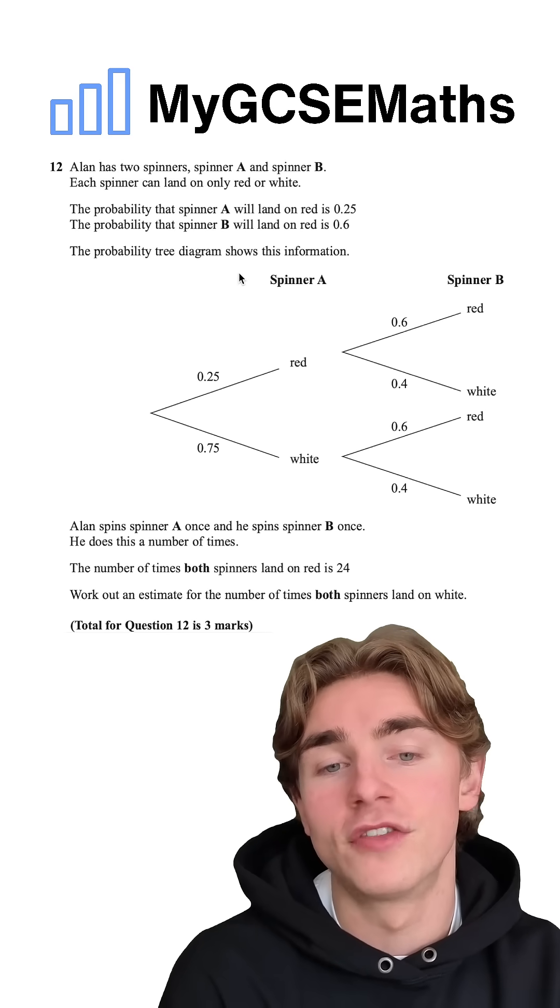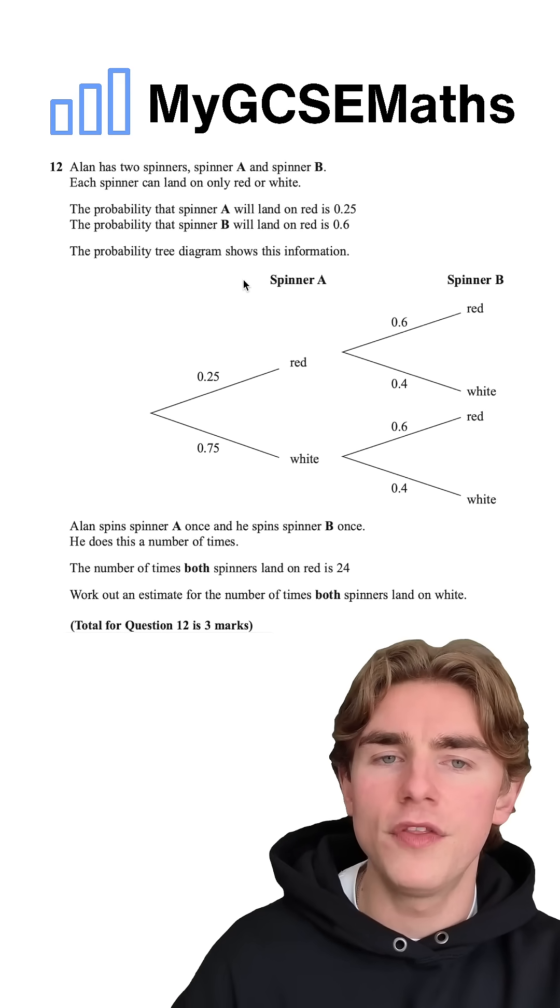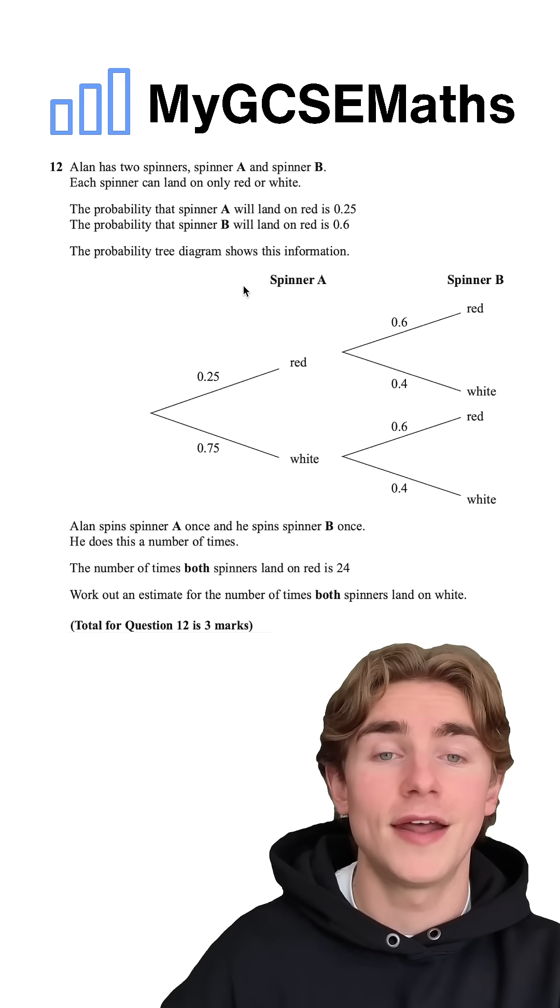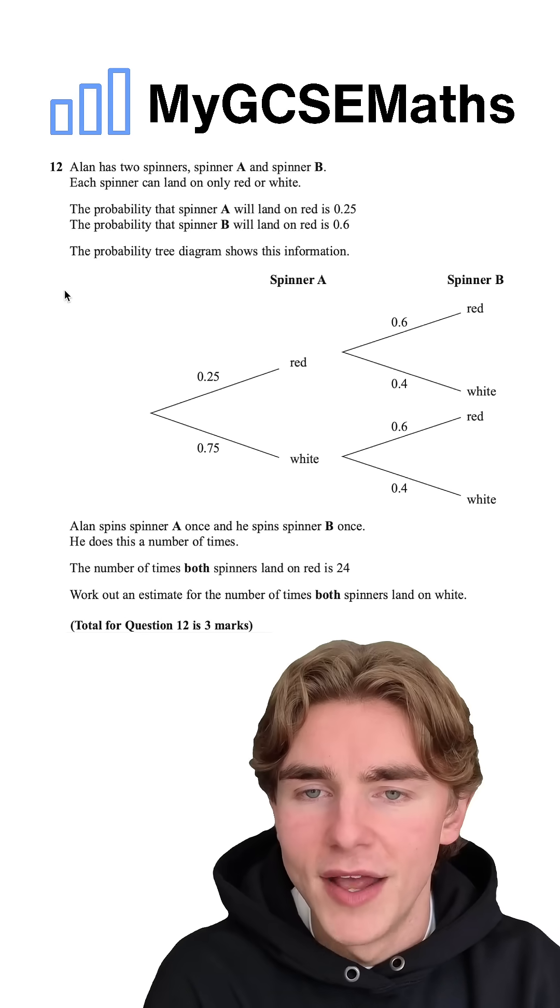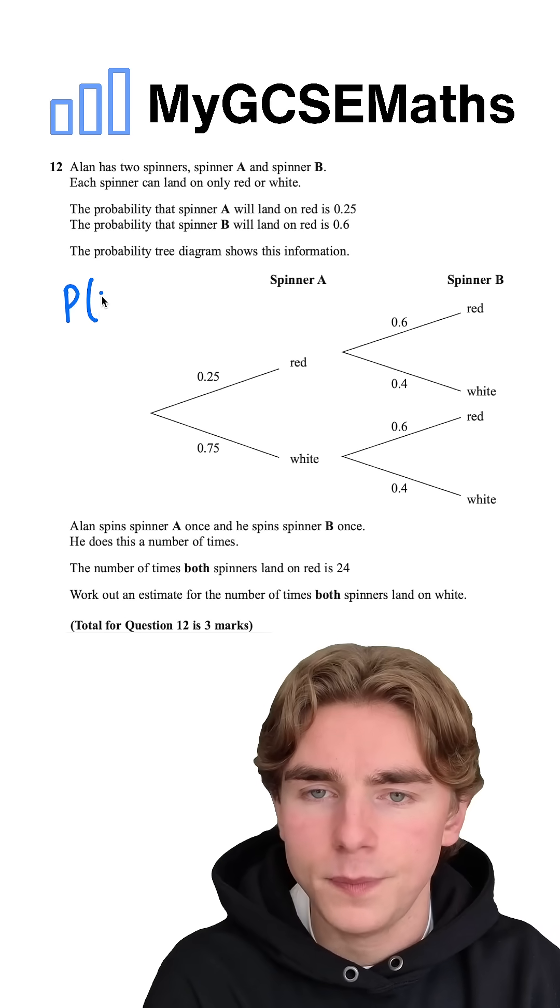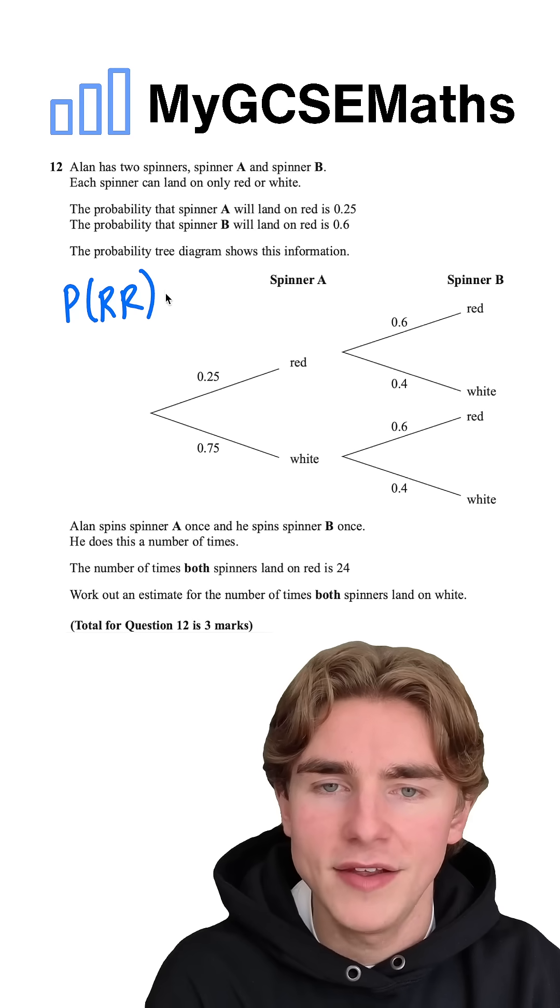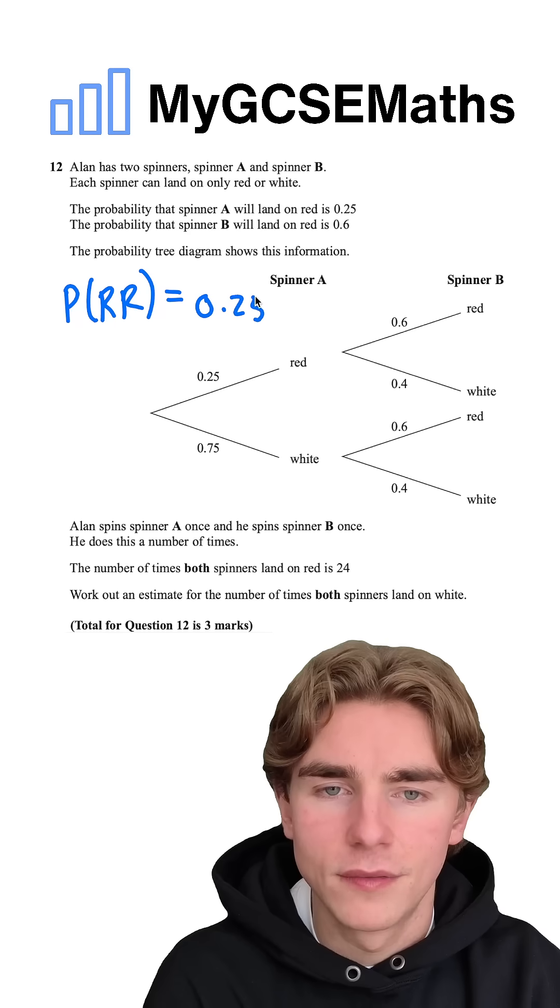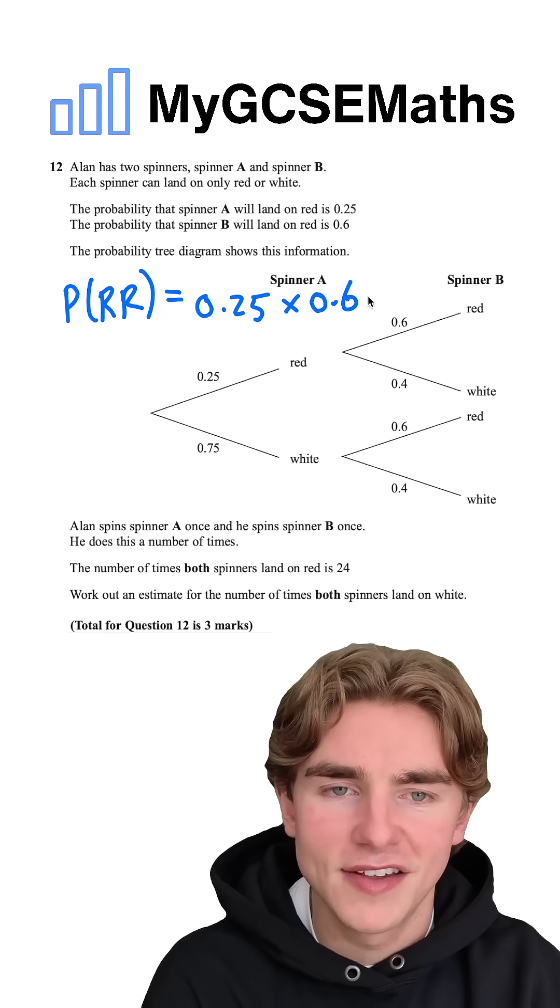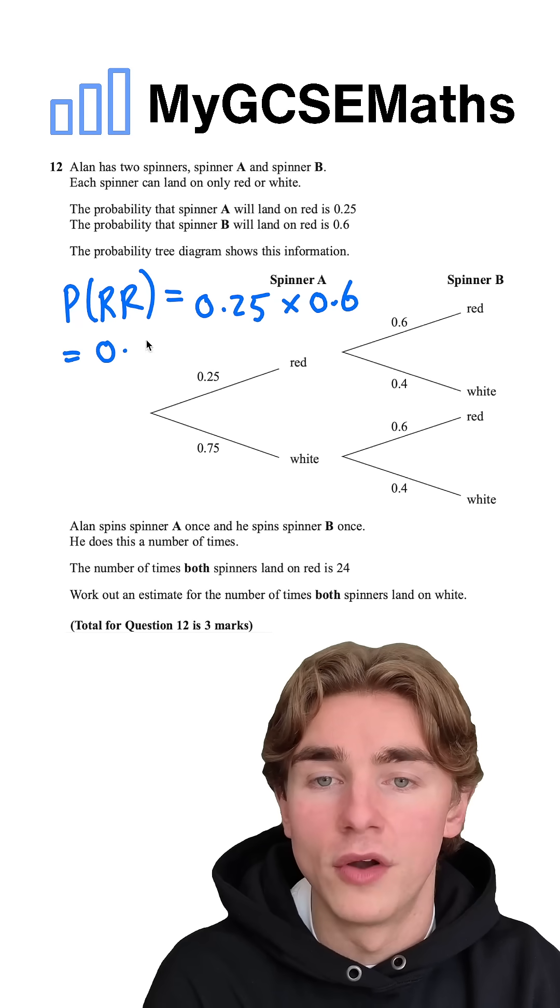How can we work out an estimate for the total number of spins? We know that the probability of getting red and red is something we can work out. Let's find the probability of getting red and then red. We multiply 0.25 by 0.6, and that gives us 0.15.